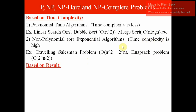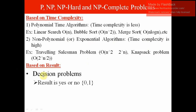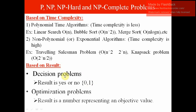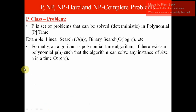Based on results, problems are classified into two types. The first is the decision problem, whose output is either yes or no, or 0 or 1. For example, linear search will indicate whether the key element is found or not found. The second type is the optimization problem, which gives results as a number — either a minimum or maximum value.